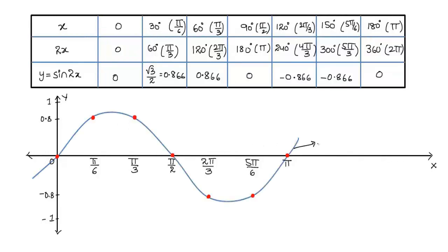This curve is named y equal to sin 2x in the interval 0 to pi. This was the basic introduction on how to draw the graph of a trigonometric function y = sin 2x in the interval 0 to pi. Hope you understood the concept. Do like and subscribe to WeReach Academy. Thanks for watching. Have a nice day.